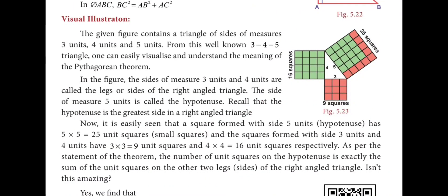In the visual illustration, the given figure contains a triangle with sides of three units, four units, and five units. By using these we can draw a right-angle triangle. It is easily seen that the square formed with side five units is the hypotenuse, and five times five equals 25 unit squares.